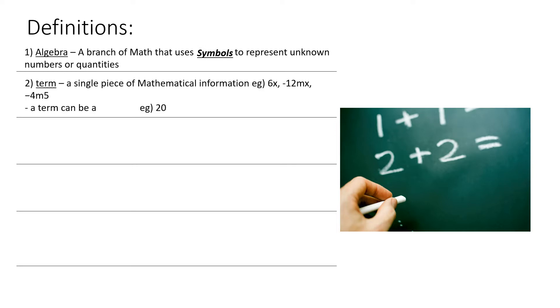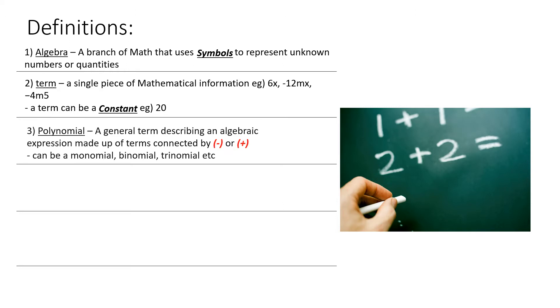Number 2, Term: a single piece of mathematical information. Examples: 6x, negative 12mx, negative 4m5. A term can also be a constant, for example 20.